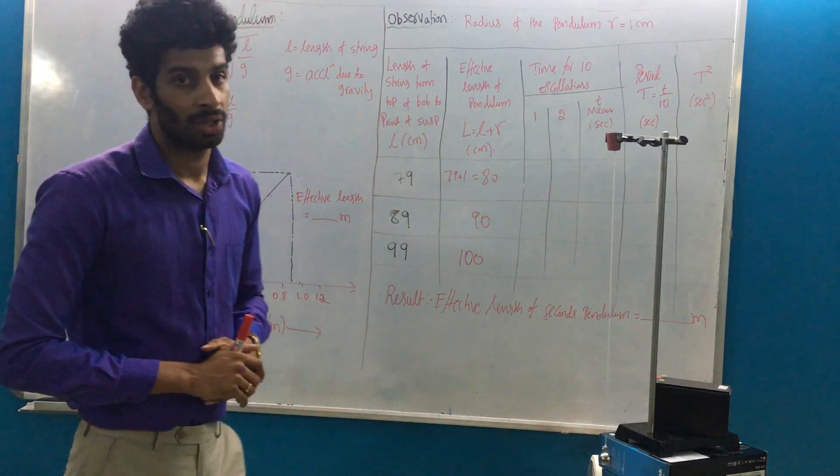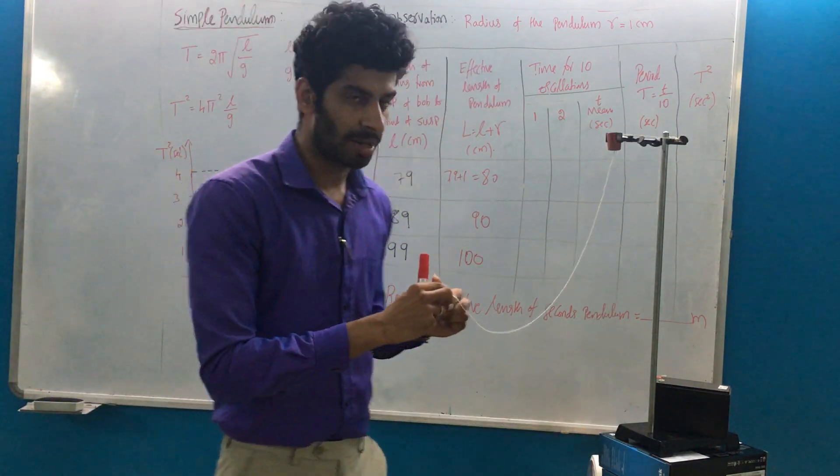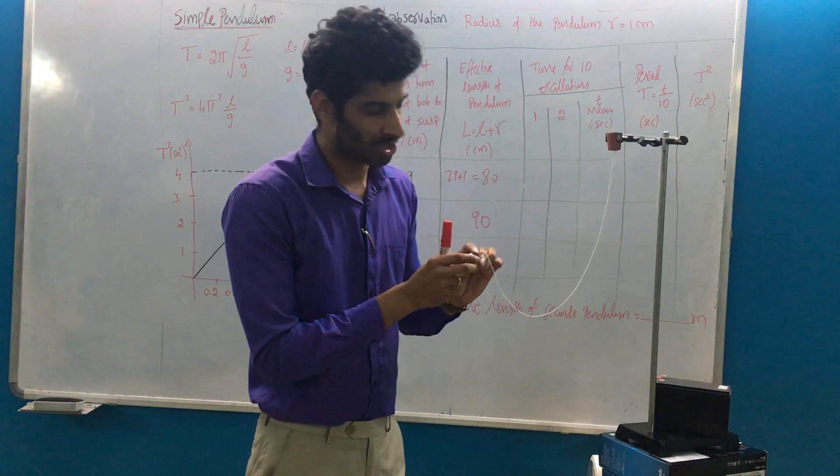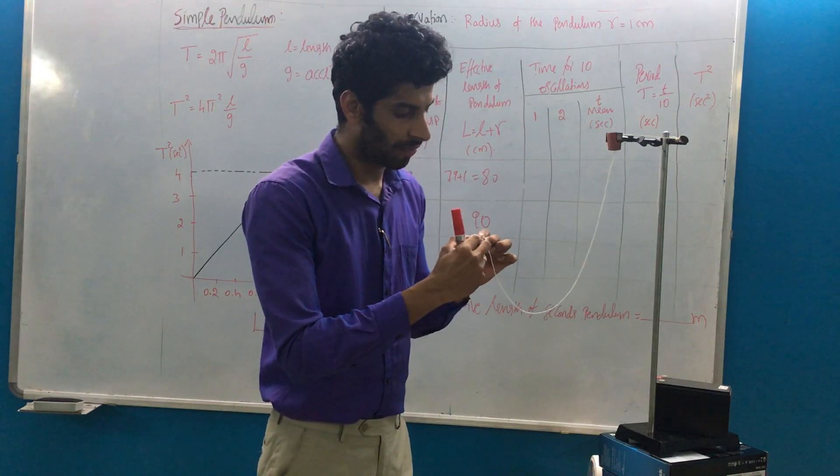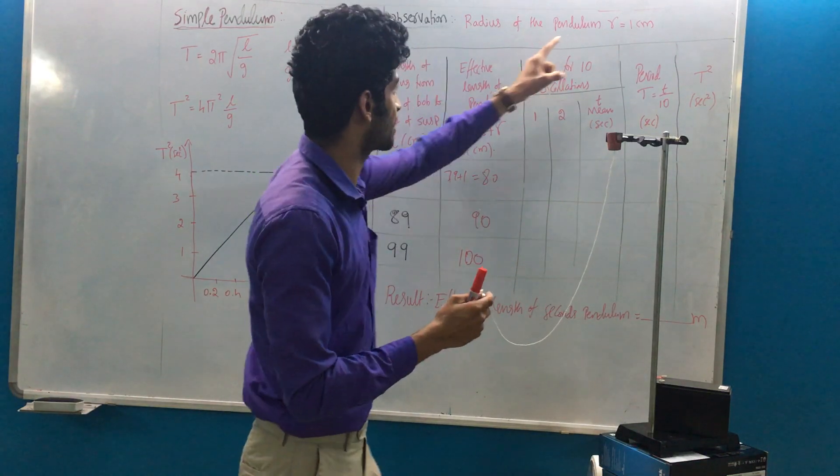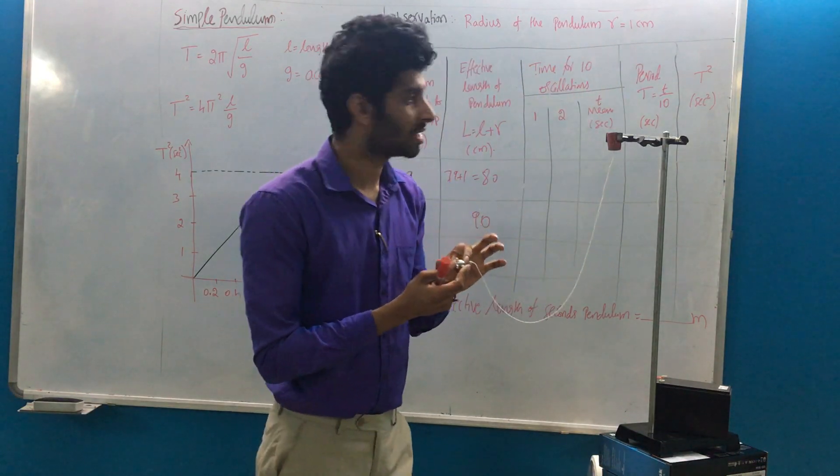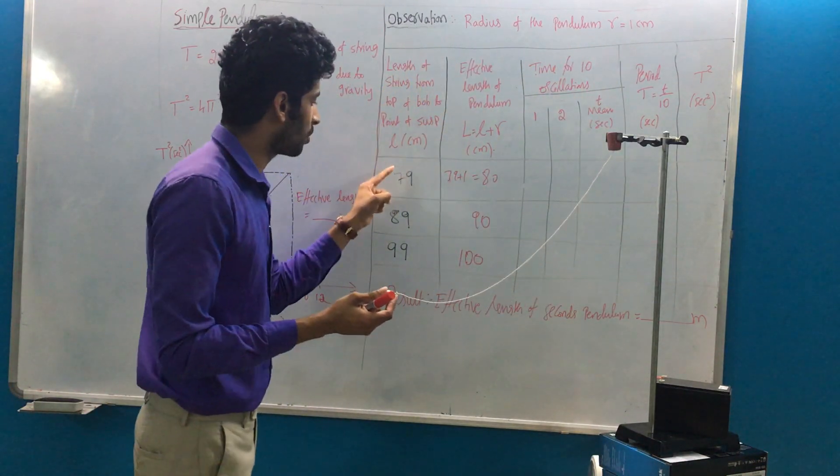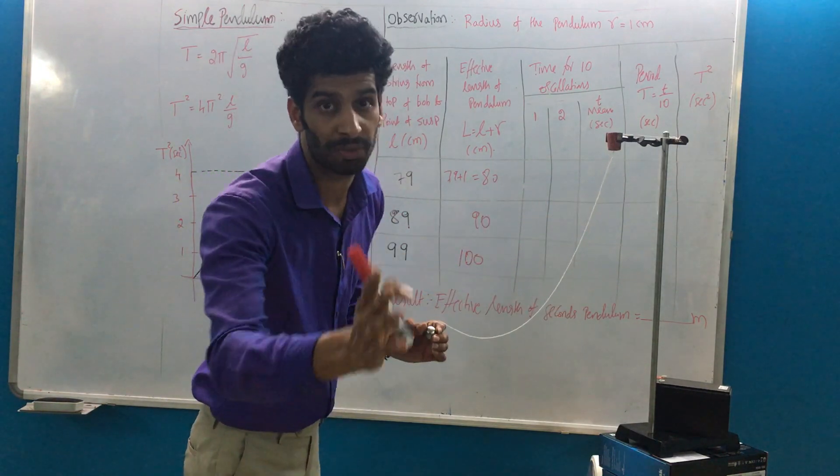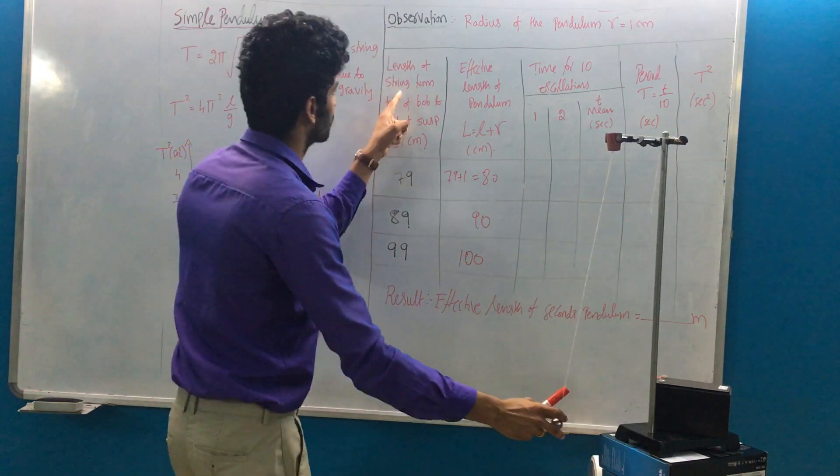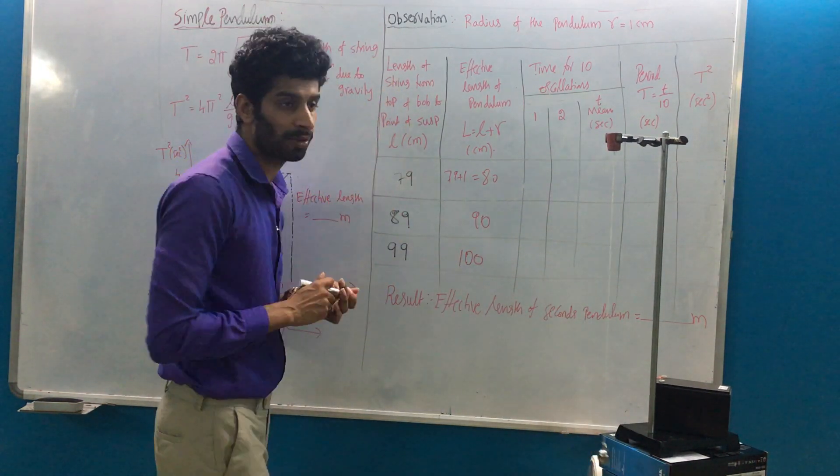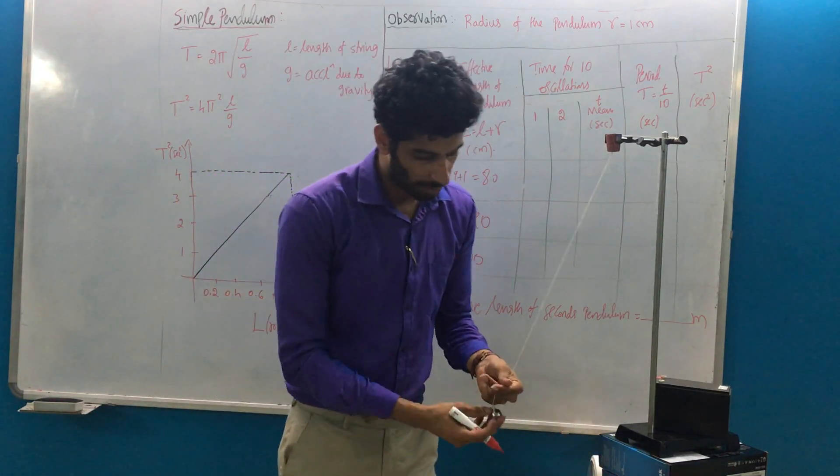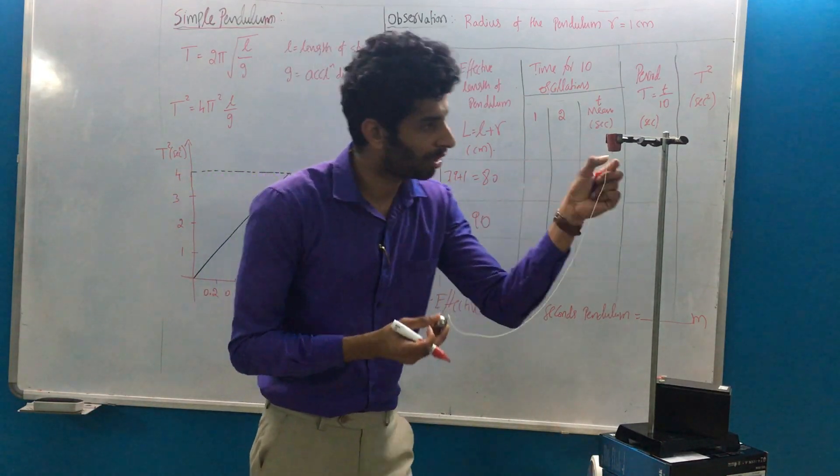This is a bob of certain mass, spherical in shape. I've already found the radius is actually one centimeter. Now we have to go for different lengths. The length of the string is measured from the top of the bob to the point of suspension.